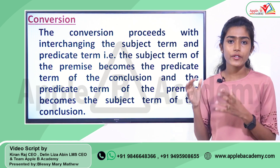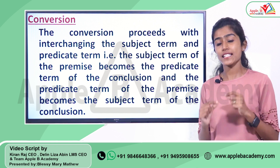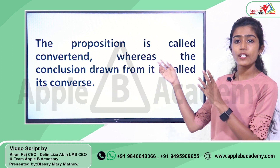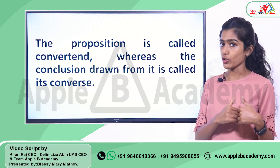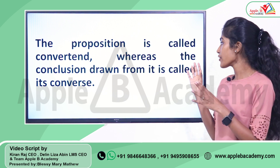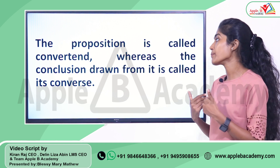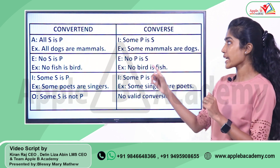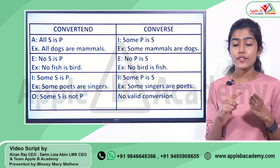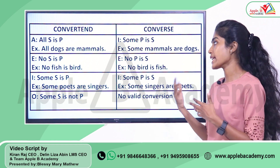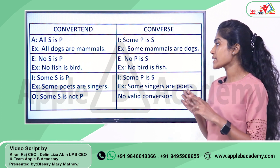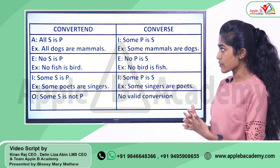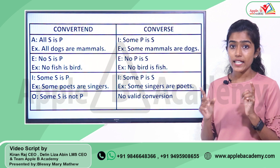We will look at the various propositions and how you can deduce a conclusion from each using conversion. The proposition used for deducing the conclusion is called the convertend, and the conclusion drawn from it is called the converse. We have four types of categorical propositions: the universal affirmative — all S is P; the universal negative — no S is P; the particular affirmative — some S is P; and the particular negative — some S is not P. We will examine how conversion applies to each of these.